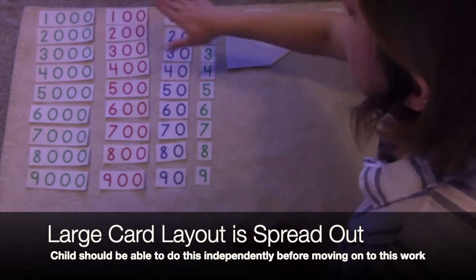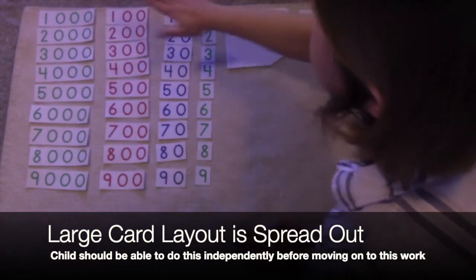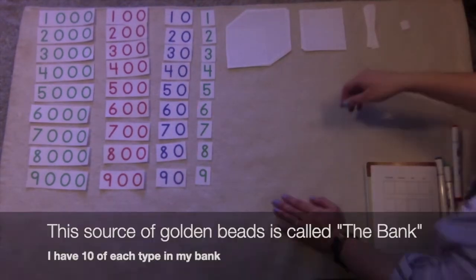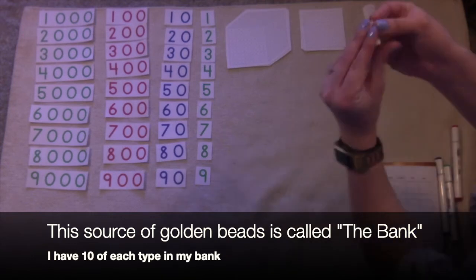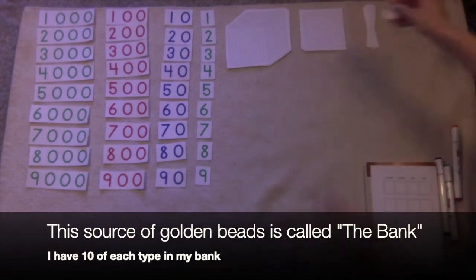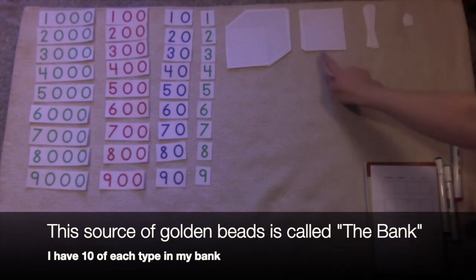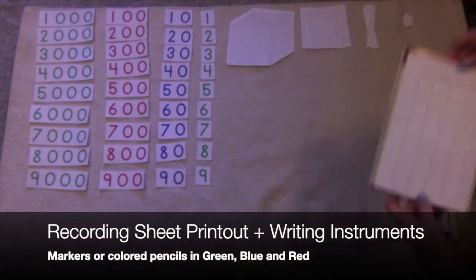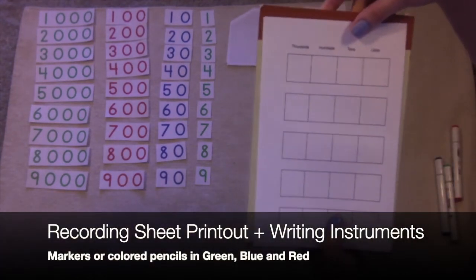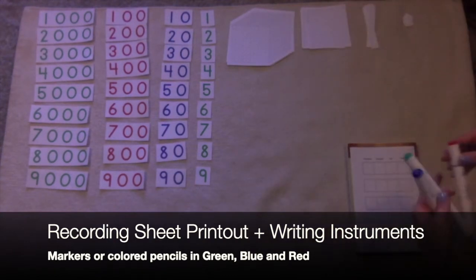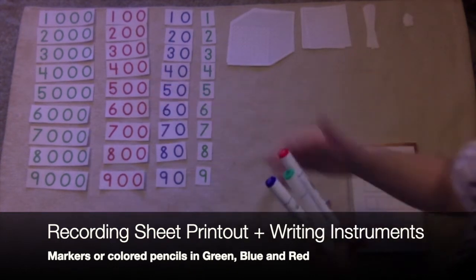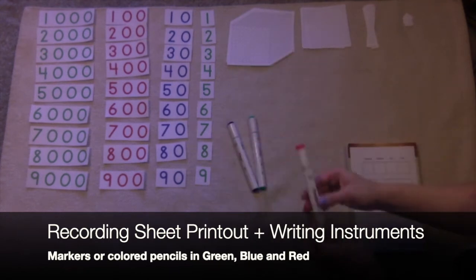So here's the setup. I have the large card layout spread out. By the time you're doing this, your child should be able to spread this out on their own. I also have some printouts of my golden beads. I've got a stack of units, tens, hundreds, and thousands. I also have a recording sheet for this work. You can print that out from our folder and I have markers. You could use colored pencils as well in the same colors as these numerals. So I've got green, blue, and red.